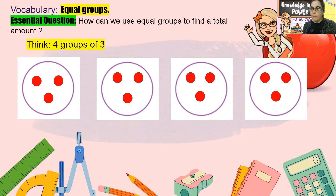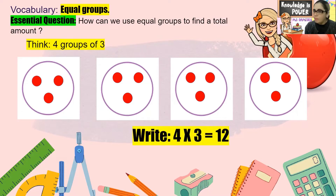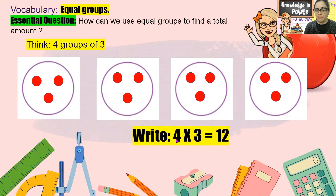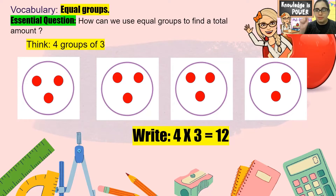Now we can write a multiplication sentence. If I have four equal groups, four is the first number in my multiplication sentence — four groups — times how many I have in each group: one, two, three. Four times three is the multiplication sentence: four groups of three.